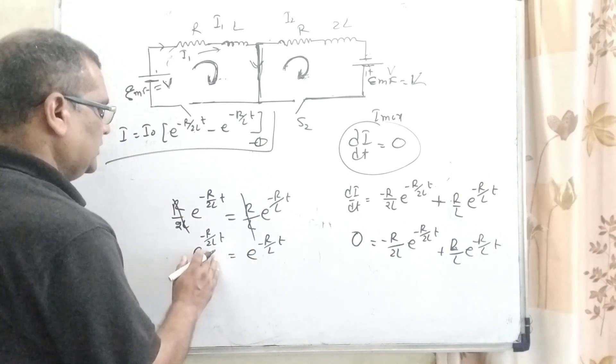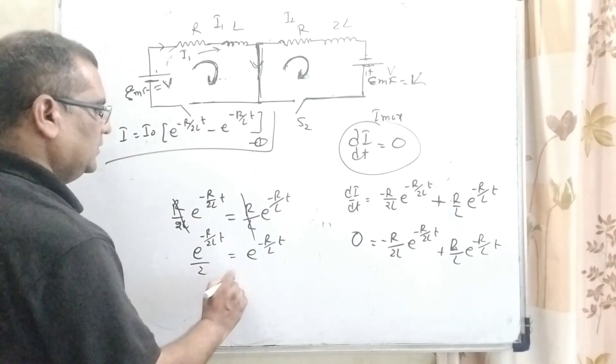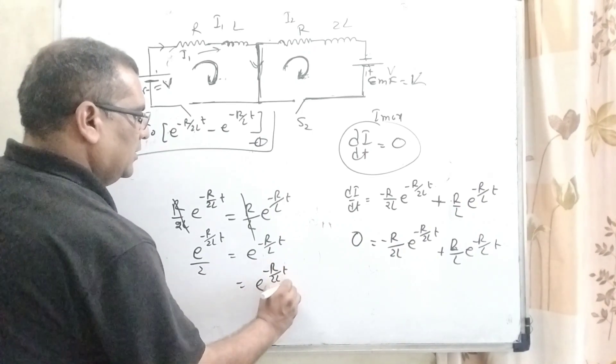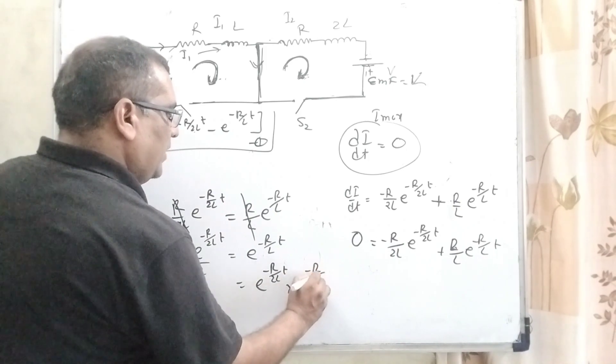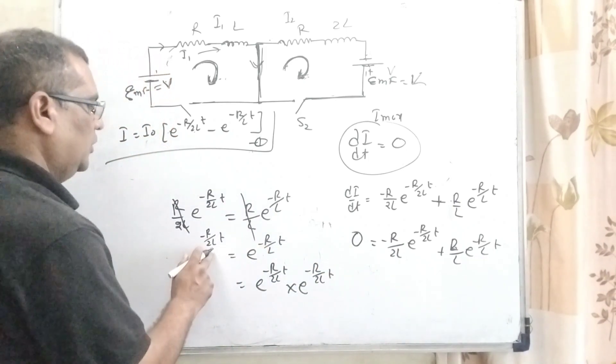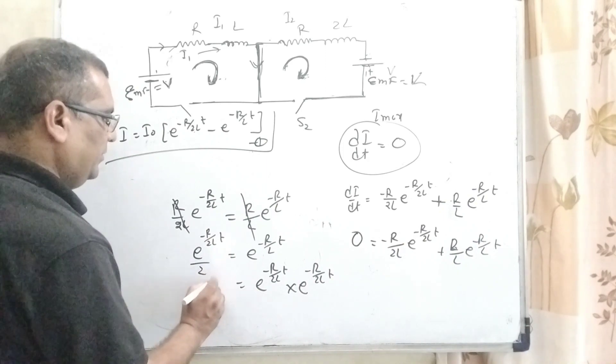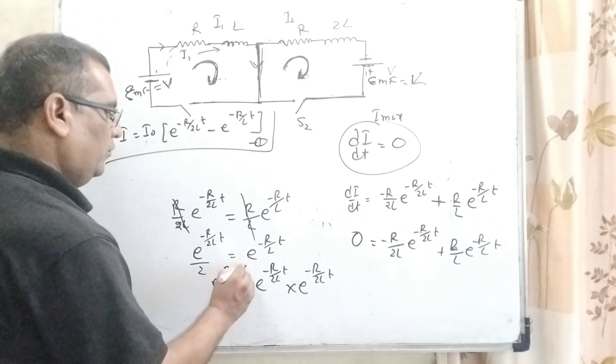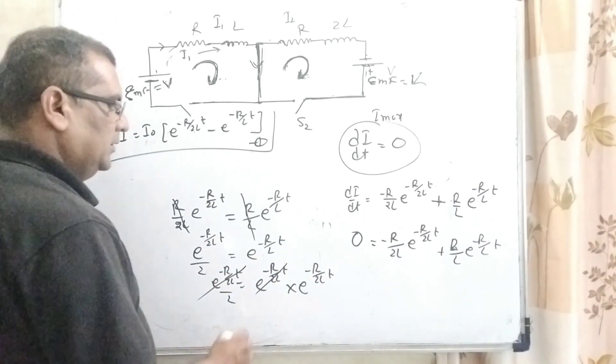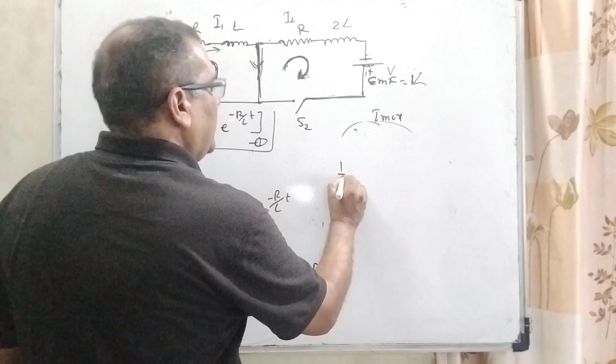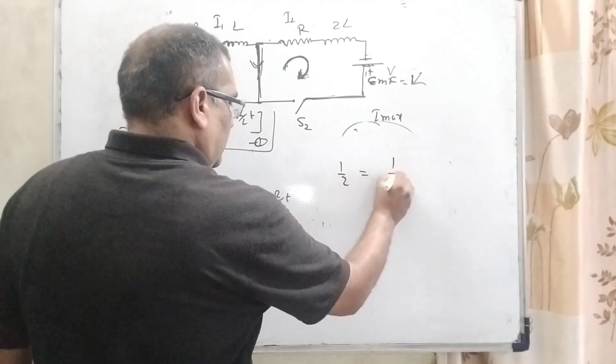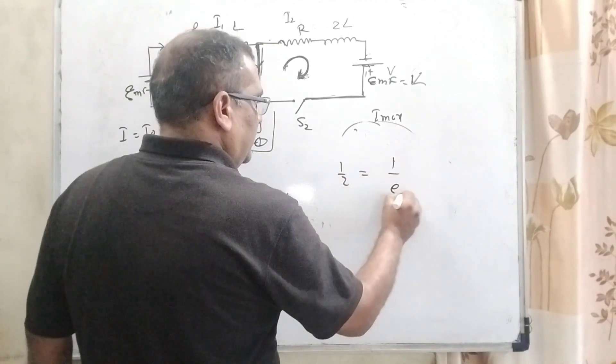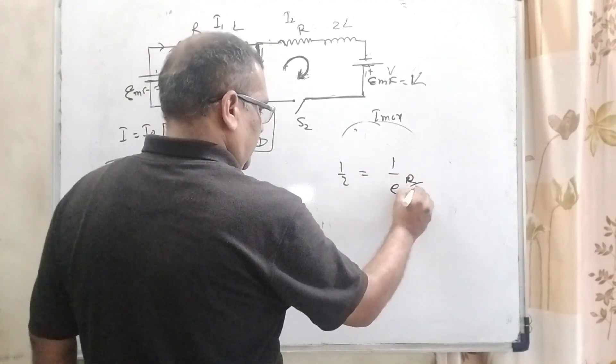That is transposing. Now, it become R by 2L e raised to power minus R by 2L T equal to R by L e raised to power minus R by L T. Then, it can be written as E raised to power minus R by 2L T into E raised to power minus R by 2L T. 1 by 2 equal to, this power is negative, so it can be written as 1 upon E raised to power R by 2L T.